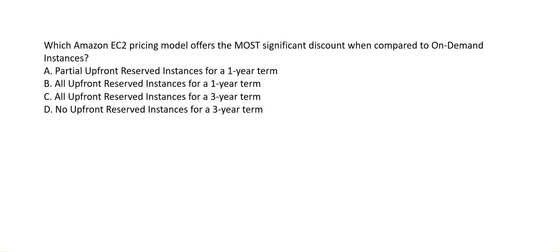Which Amazon EC2 pricing model offers the most significant discount compared to on-demand instances? All four options involve reserved instances. Partial upfront reserved instances for one year is not the cheapest. All upfront reserved instances for one year is cheaper. No upfront reserved instances for three years is the costliest since all costs are operational with no capital commitment. All upfront reserved instances for three years is the cheapest option. Therefore option C — all upfront, three-year reserved instances — provides the most significant discount.